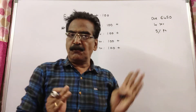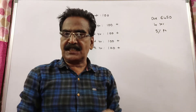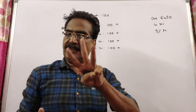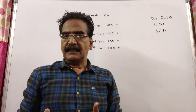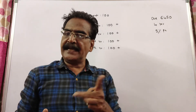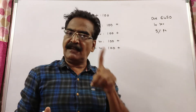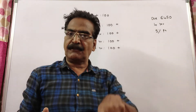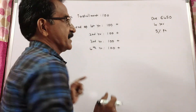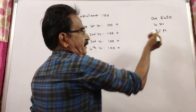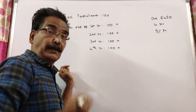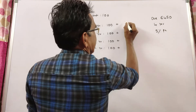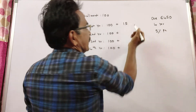The first Rs. 100 you pay at the end of the first year will fetch interest for 3 years — for the second year, third year, and fourth year. The interest rate is Rs. 5 per 100 per annum, so for 3 years the interest is Rs. 15.